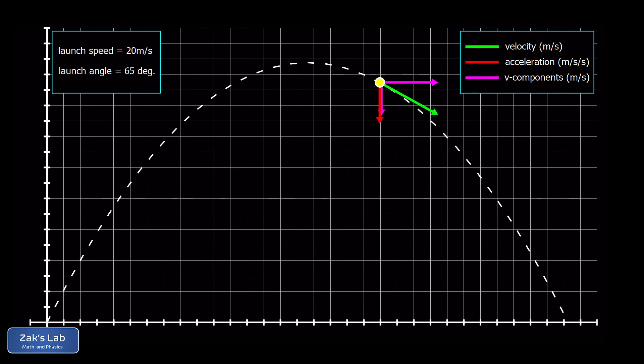This negative y-velocity component continues to grow on the way down, even as the x-component of velocity stays constant. The velocity vector itself stays tangential to the trajectory, so that continues to rotate in order to stay tangential, and the length is now increasing due to the increasing length of the y-component.